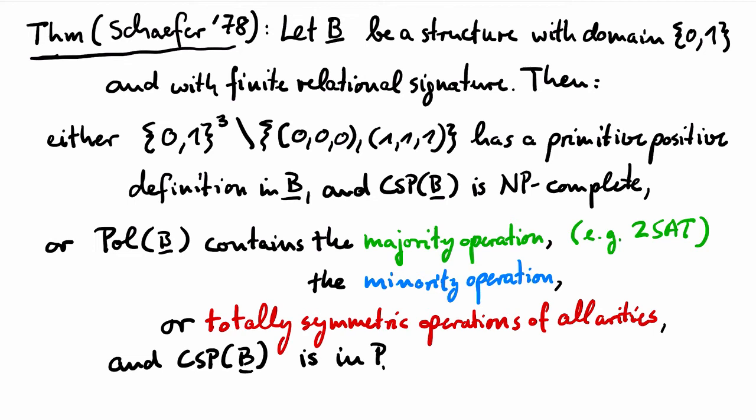In the case that B has a minority polymorphism, one can show that every relation of B can be defined by a conjunction of linear equations over the two-element field {0,1}. Satisfiability of systems of linear equations over finite fields can be solved by Gaussian elimination. So this captures in particular affine 3-SAT.